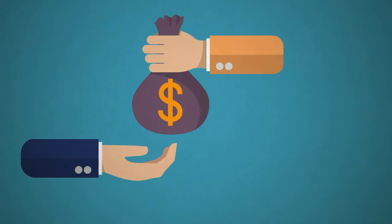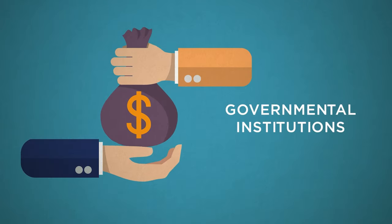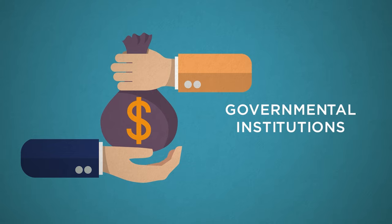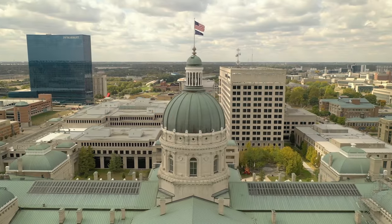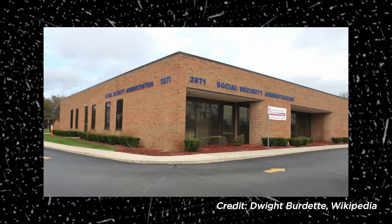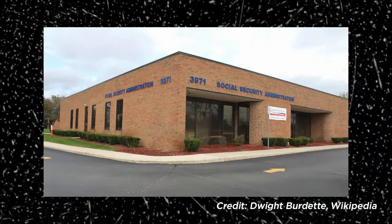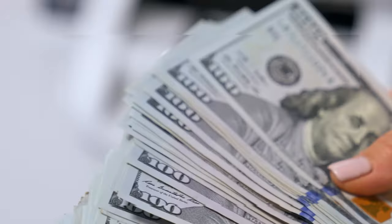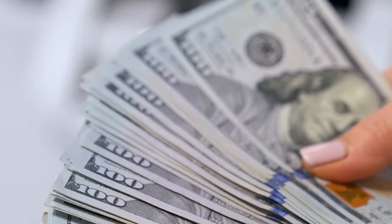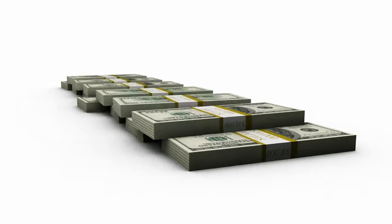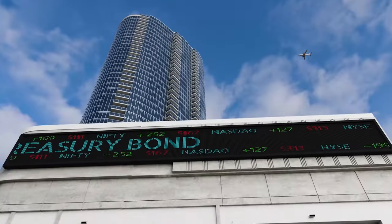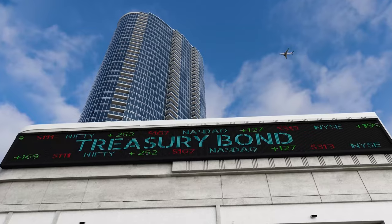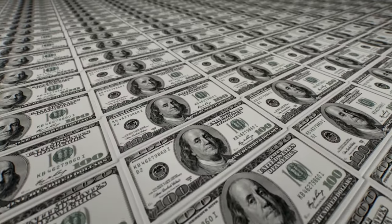Interestingly, the country can even borrow money from its own governmental institutions and subsidiaries. Some governmental agencies, such as the Social Security Trust Fund, sometimes get more revenue from taxes than they need. Instead of stashing this surplus cash, these agencies buy UST bonds, thus lending money to the government.